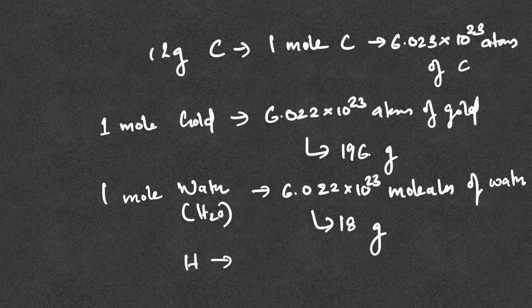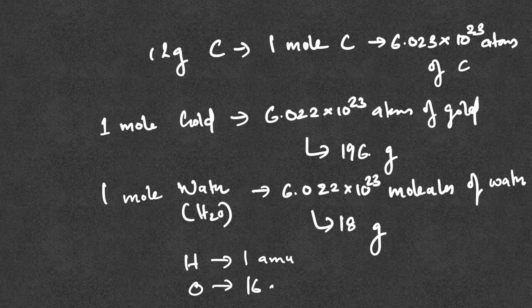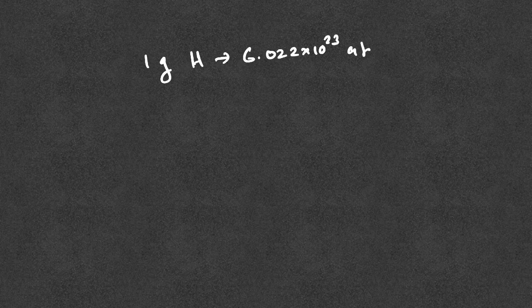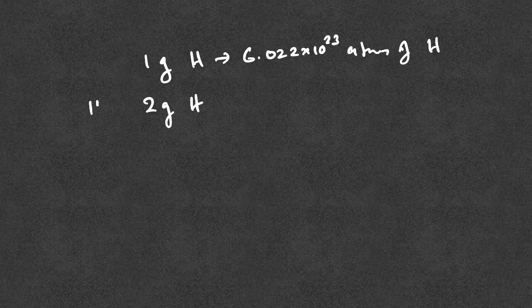Hydrogen has an atomic mass of 1 amu. Oxygen has an atomic mass of 16 amu. Therefore H₂O has a molar mass of 18 amu. So 1 gram of hydrogen contains 6.022 into 10²³ atoms of hydrogen, and 2 grams of hydrogen is H₂.